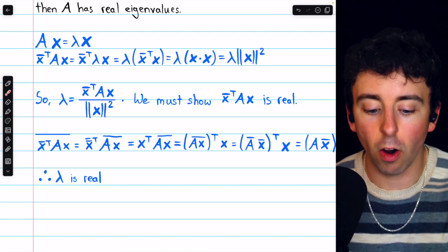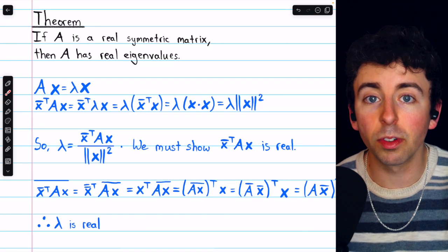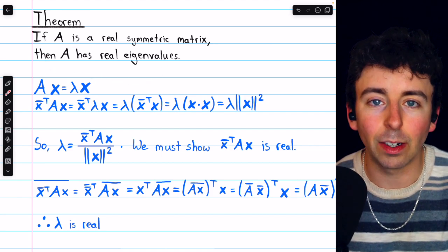And lambda was just an arbitrary eigenvalue of an arbitrary real symmetric matrix. And so the result is proven. A real symmetric matrix will have real eigenvalues.